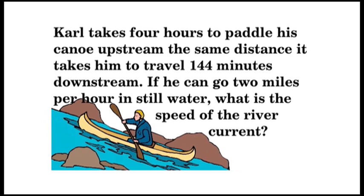Carl takes four hours to paddle his canoe upstream, the same distance it takes him to travel 144 minutes downstream. If he can go two miles per hour in still water, what is the speed of the river current?